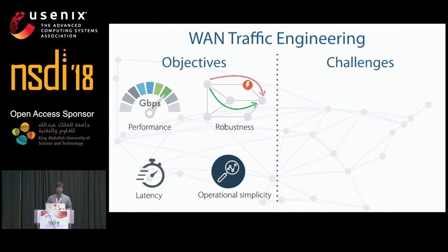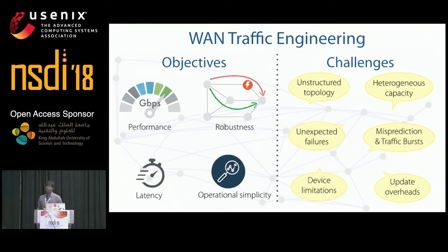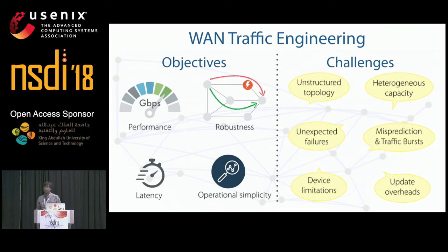Traffic engineering systems must achieve these competing objectives while navigating various challenges. Wide area networks grow based on predicted demand growth, leading to unstructured topologies unlike data center topologies, with non-uniform link capacities. Failures such as misbehaving routers or links going down are common. Traffic patterns are difficult to predict, and the number of flow rules installable on routers is bounded. Frequently updating routing state in response to network changes also leads to significant overheads.